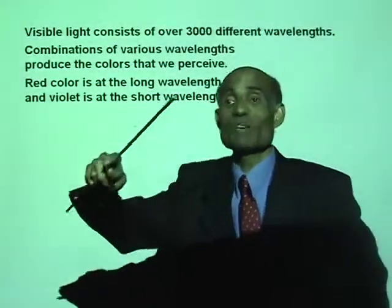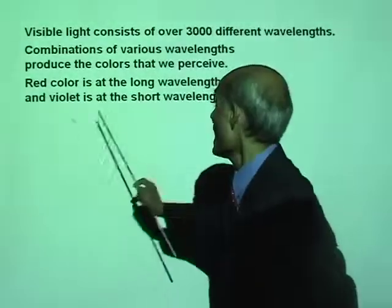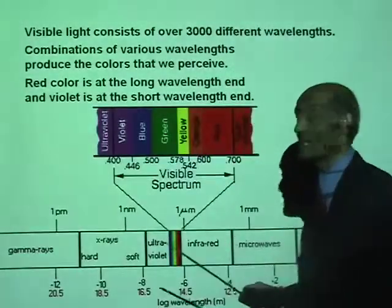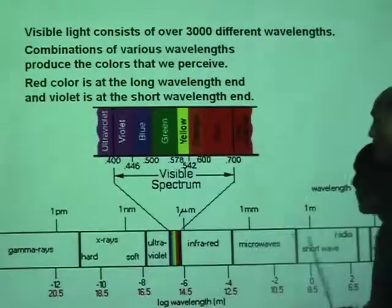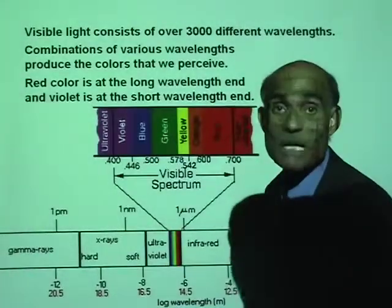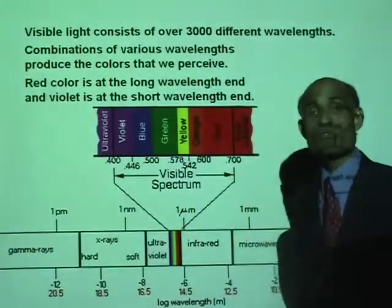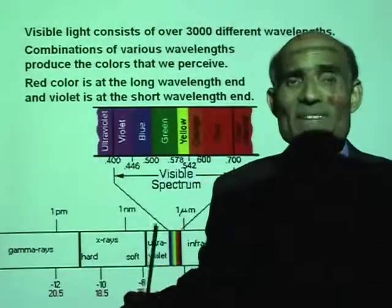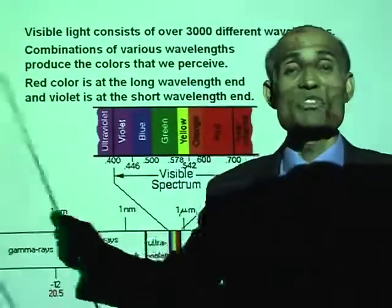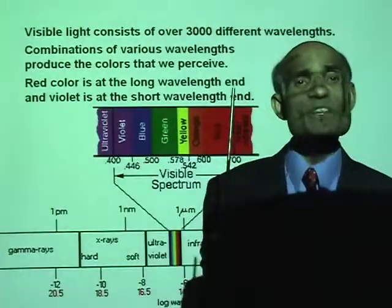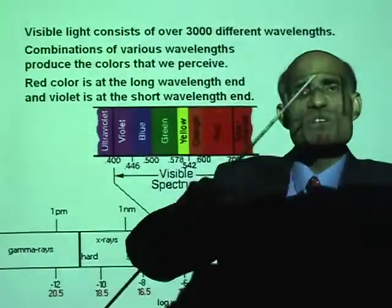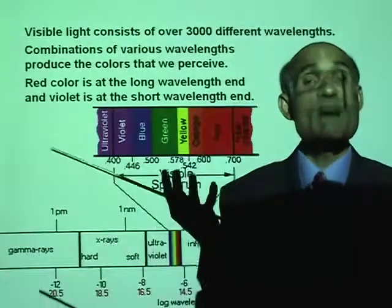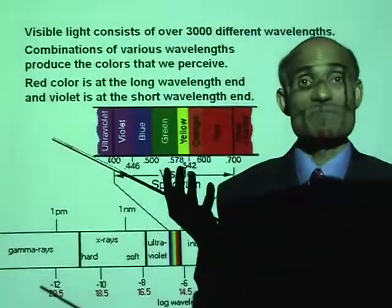The wavelength of red colors will be long, and violet is at the short wavelength. What I have shown here is a complete picture of what we call electromagnetic radiations. Electromagnetic radiations is a complete spectrum of radiations emitted by objects.